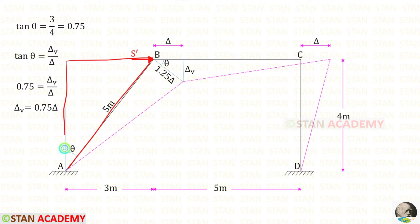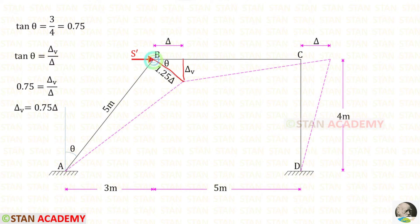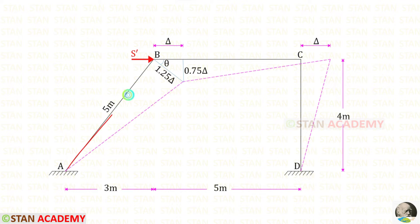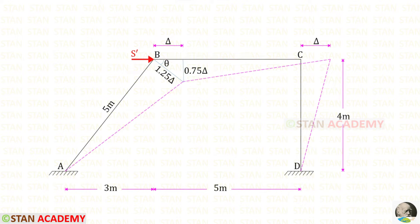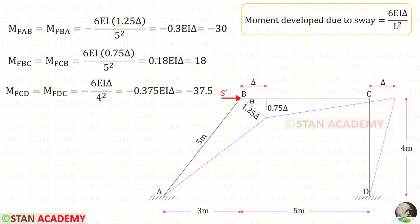Again, let us take this triangle and find tan theta, which equals 3 upon 4, giving 0.75. In this triangle, tan theta equals delta V upon delta. Applying tan theta as 0.75, we get the relation delta V equals 0.75 delta. For the inclined member AB, we have to consider the displacement 1.25 delta. For the horizontal member BC, we have to consider the displacement 0.75 delta. And for the vertical member CD, we have to consider the displacement delta.